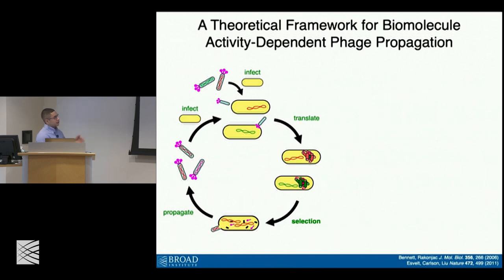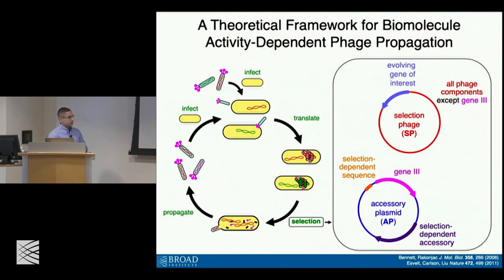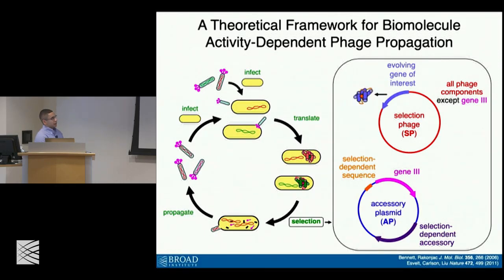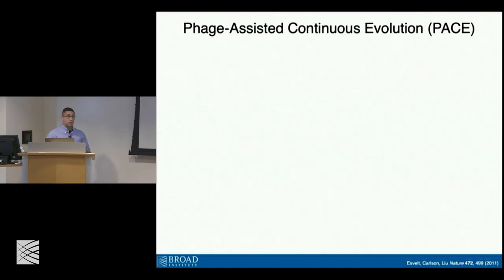Going back to this life cycle — if we zoom in on the selection stage, we can refactor the phage genome into two elements. What used to be the phage genome we now call the selection phage, and it lacks gene 3, the gene encoding this important protein P3. In its place we've added the evolving gene of interest. The other part of this refactoring is including gene 3 on what we call the accessory plasmid — a selection-dependent plasmid wherein if a biomolecule can access some aspect of the sequence that results in the production of gene 3 or translation of P3, it would potentially complement the deficiency in the selection phage. So the selection phage produces this one protein; if it can positively affect this selection sequence, it makes P3, which complements the deficiency and results in infectious bacteriophage.